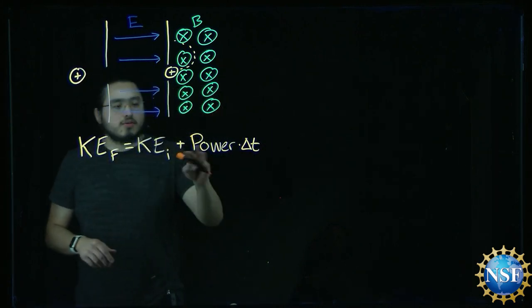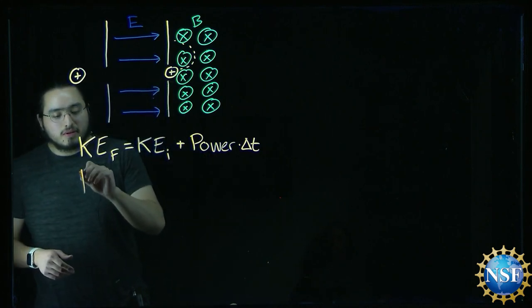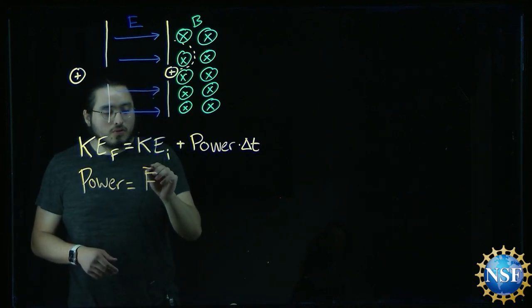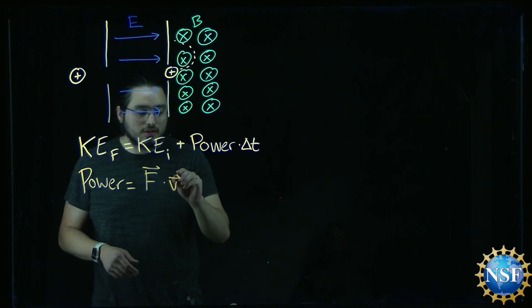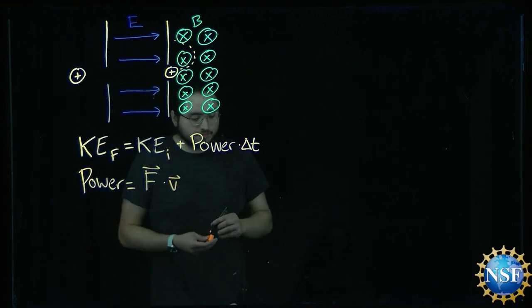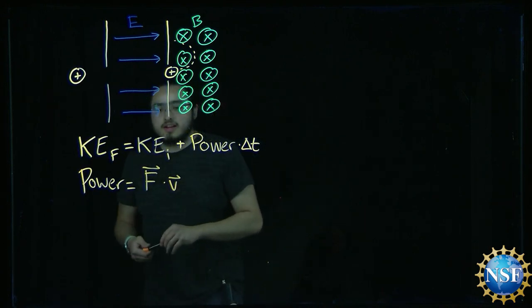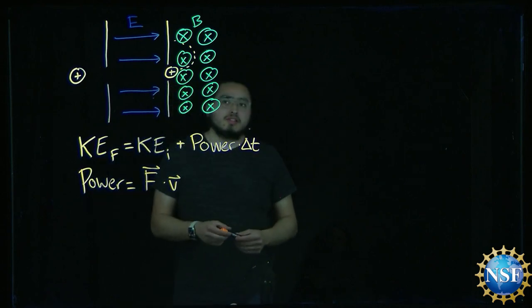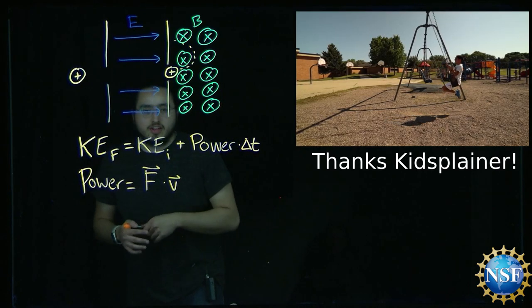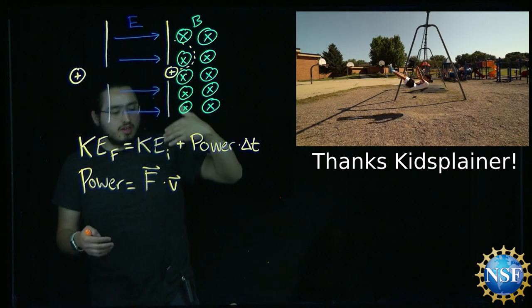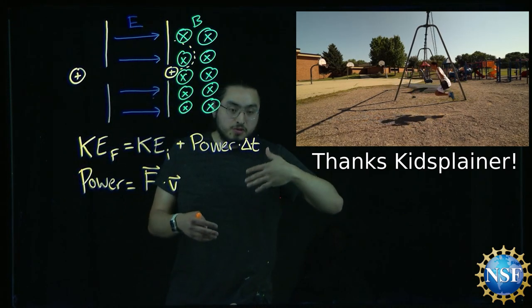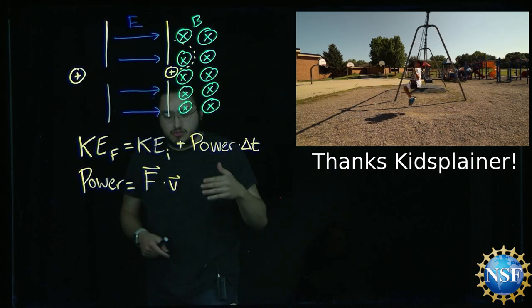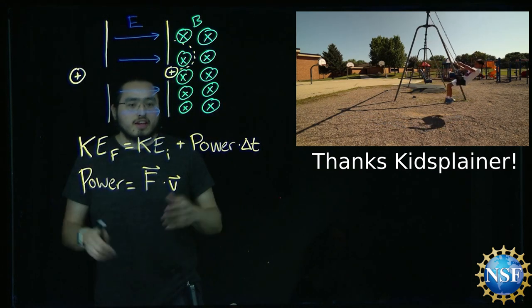A way to write out what the equation for power is: power equals a force dotted with a velocity. A way to kind of break this down is if you're on a swing set, you don't kick your feet at the top at the end of the swing. You kick it at the point of fastest speed, which is at the bottom, and that's when you kick your feet so you swing faster and faster and thus it's increasing your kinetic energy.